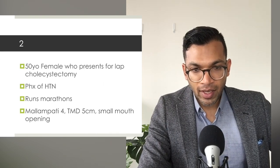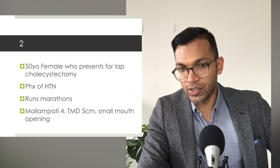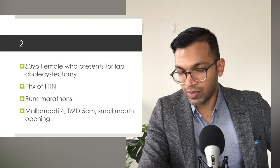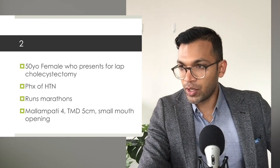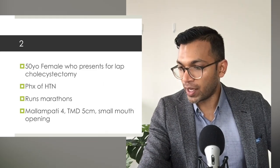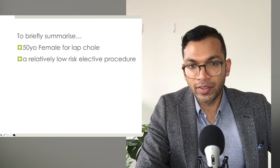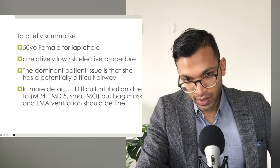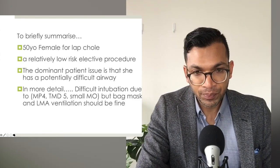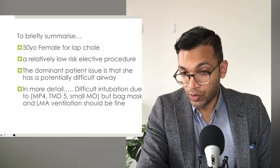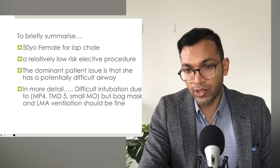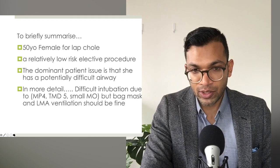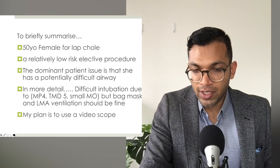Next: a 50-year-old female for laparoscopic cholecystectomy with hypertension who runs marathons. Her airway scores are concerning - Mallampati 4 is a bad score, thyromental distance of 5cm is not great, and small mouth opening is obviously not great either. Briefly summarised: 50-year-old female for a lap coli, relatively low-risk elective procedure. Dominant patient issue is a potentially difficult airway. In more detail: difficult intubation based on findings, but bag-mask and LMA ventilation should be fine, and my plan is to use a videoscope.